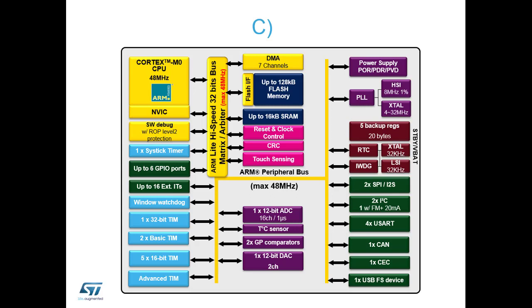You switch on the bits that you need as and when you need them, and then you can switch them off again. It's quite a modular-based architecture. If you think of each of those color-coded blocks as a module — you either use it or don't, switch it on when you need it, switch it off when you don't — it's not as scary as you think. We're going to look at this architecture structure and show you the different features, and during the hands-on we will use some of these peripheral blocks for part of our application.